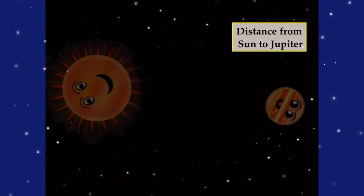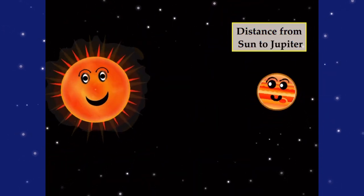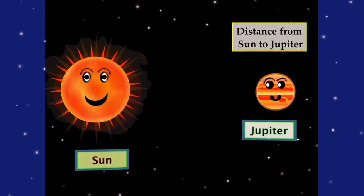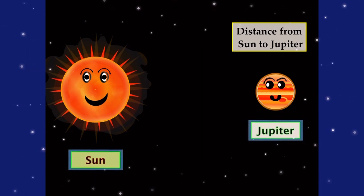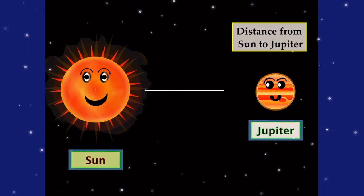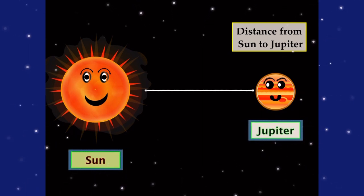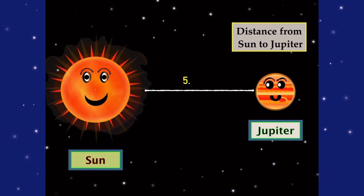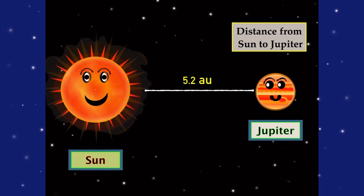Here we got the distance from the Sun to Jupiter. Jupiter is our biggest planet, and it's 5.2 AU away.